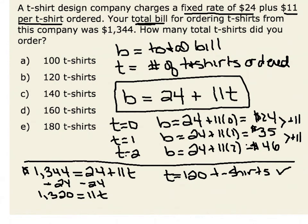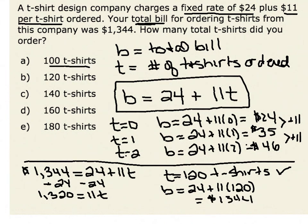We could check to see if this is indeed our answer by substituting 120 back in for t. Our bill would be equal to $24 plus 11 times 120. 11 times 120 is equal to 1,320, plus our $24, which indeed totals $1,344 — verifying that 120 t-shirts was the number of shirts we placed in our order.